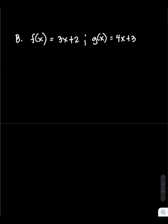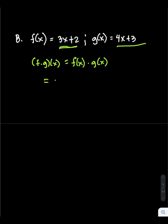For example number 2, we have f of x equals 3x plus 2, and g of x equals 4x plus 3. Find the product. The formula is the quantity of f times g of x equals f of x times g of x. We can use the FOIL method.